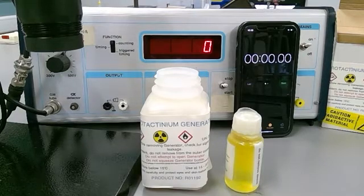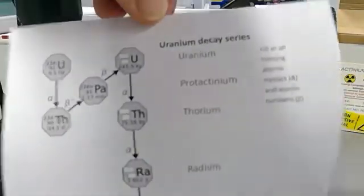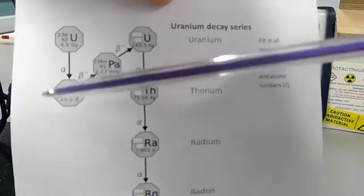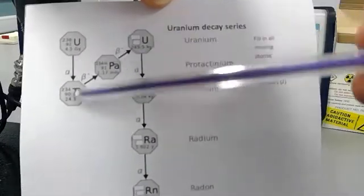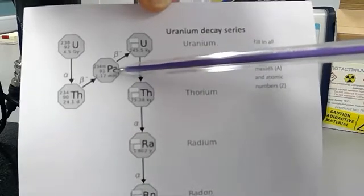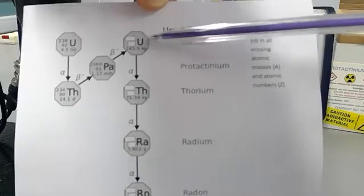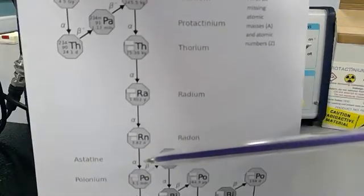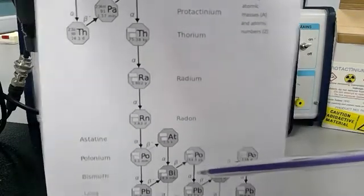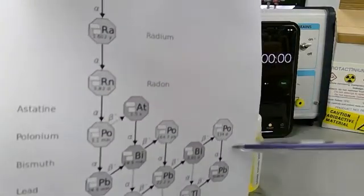We're going to be measuring the half-life of protactinium. Protactinium is on the decay series for uranium — uranium decays to thorium, which decays to protactinium. And the protactinium decays via beta emission to uranium, thorium, radium, radon, etc., all the way down to lead, which is stable.